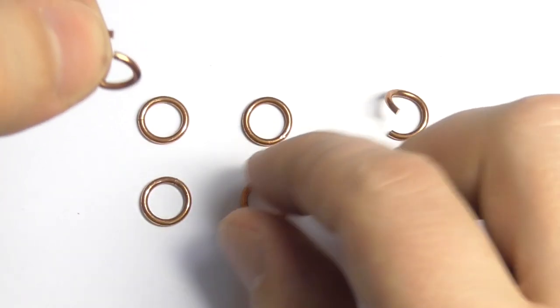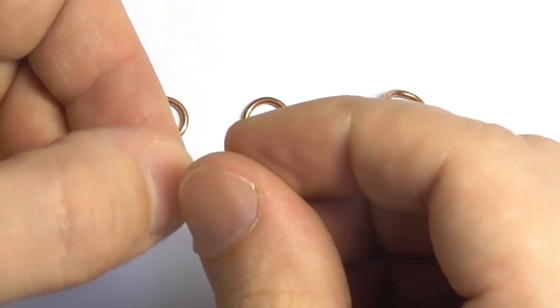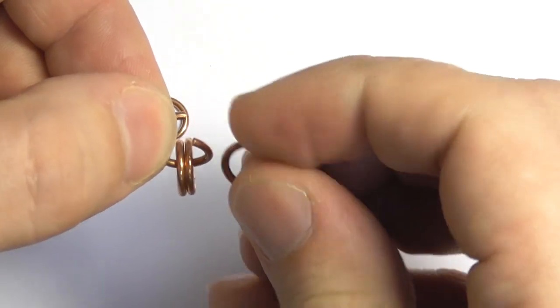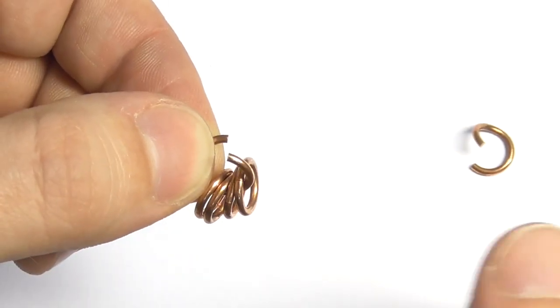Let's take one open ring and put all closed rings on this ring. Like that. Let's close the ring.